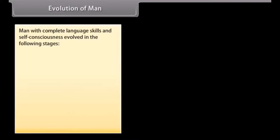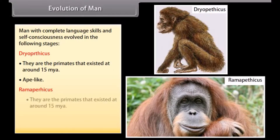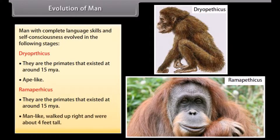Man with complete language skills and self-consciousness evolved in stages. Dryopithecus were ape-like primates that existed around 15 million years ago. Ramapithecus were man-like primates that also existed around 15 million years ago — they walked upright and were about 4 feet tall.